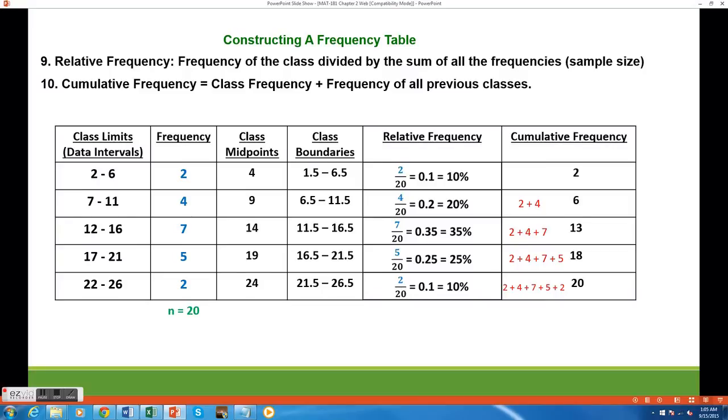Cumulative frequency is a running total of all the class frequencies. The cumulative frequency of the first class is just equal to the class frequency, which is 2.